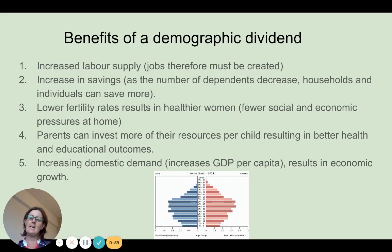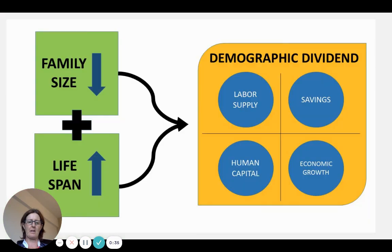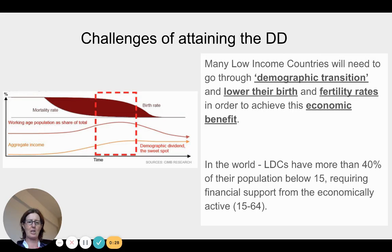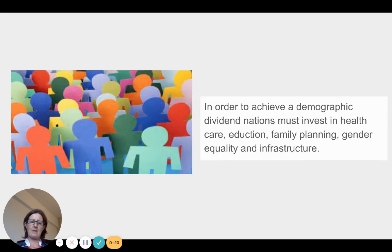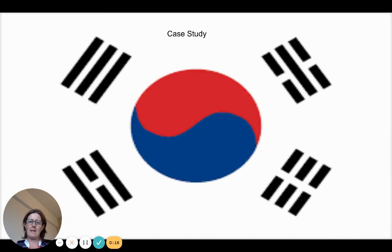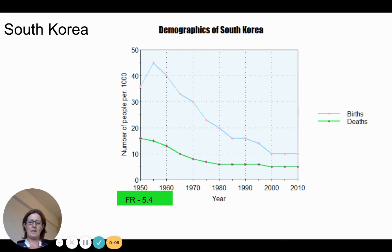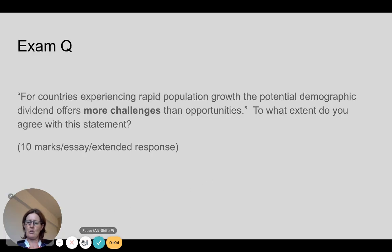South Korea invested heavily into infrastructure and family planning. It doesn't just happen — the government has to be on board and invest in this. There are a number of benefits: increased labor supply, and if there are jobs, increased savings. You can put more investment into that one or two children that you do have, so more resources, better educational outcomes, and hopefully the GDP of a country will also increase. Some countries like the Gambia are still going through this challenge. Things that are needed: invest in health, education, family planning, and gender equality. For South Korea, fertility rates have fallen — and this could also be an examination question for you.